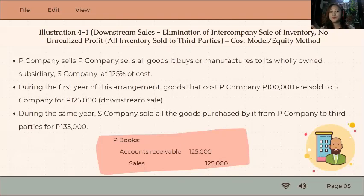When sold to the outside, we say there's no unrealized gain that needs to be eliminated. But the sales between them still need to be eliminated.